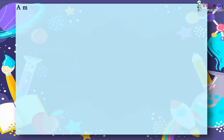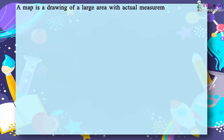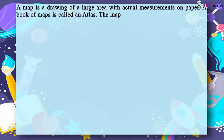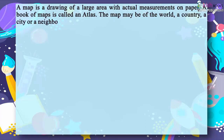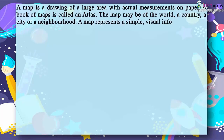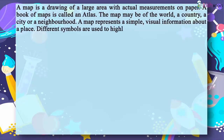Maps. A map is a drawing of a large area with actual measurements on paper. A book of maps is called an atlas. The map may be of the world, a country, a city, or a neighborhood. A map represents simple visual information about a place.